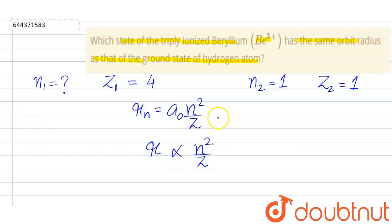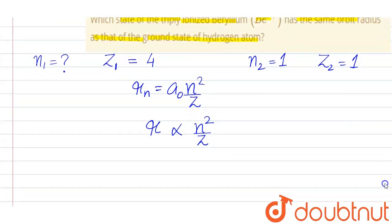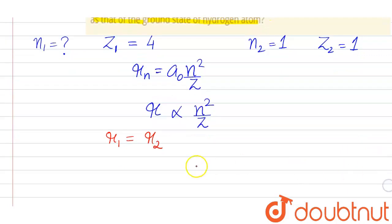So, that means if we put the value here, and we have to find, here R₁ is equal to R₂, it is given in the question. They have the same radius.